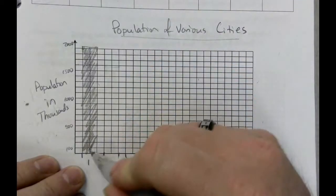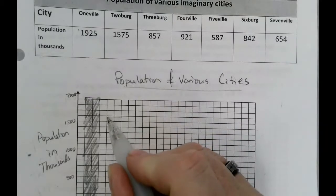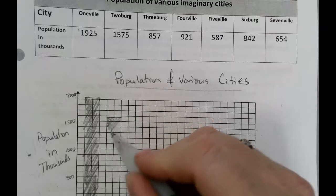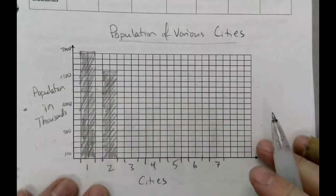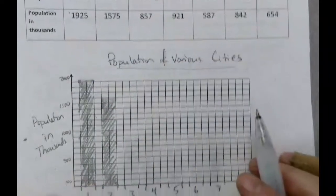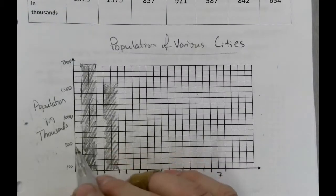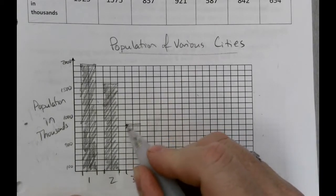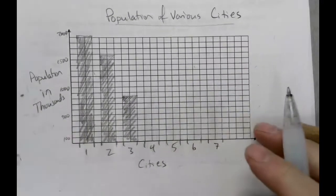Two-ville is at about 1,575 — so just about 75 above the 1,500 line. Three-ville is 857,000 — so below 1,000, just a little over the 800 mark. You can see they're distinct and don't run into each other.